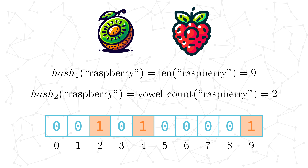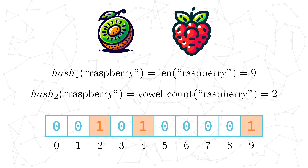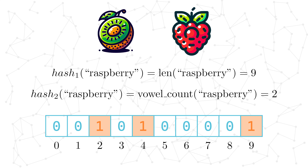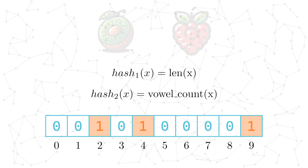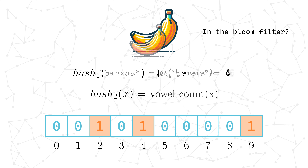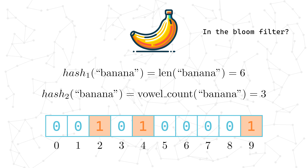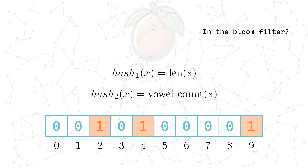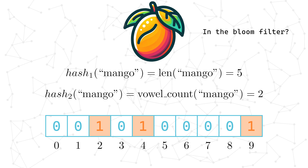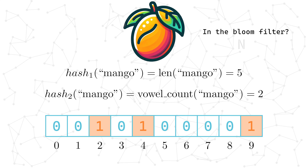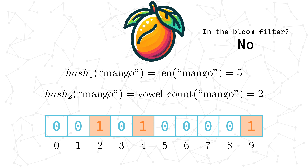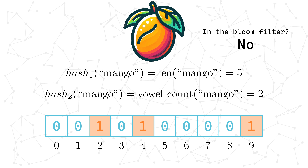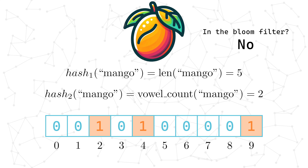Note: we never ever set a bit back to a 0 once it's been set to a 1 — you can't ever delete items from a bloom filter. So after our insertions, this is what our bloom filter looks like. Now let's look up some fruit, starting with banana. It has six letters and three vowels. Because the bits at those positions are not 1, we know with 100% certainty that we have not previously inserted banana into our bloom filter. Mango has five letters and two vowels. Even though there's a 1 at index position 2, index position 5 is still a 0, so we again know with 100% certainty that we haven't inserted mango before. As long as at least one bit is a 0, we know for sure that our bloom filter has not seen that fruit before.